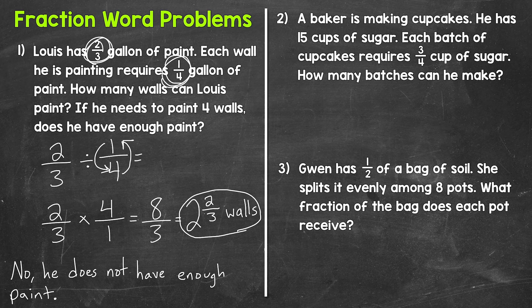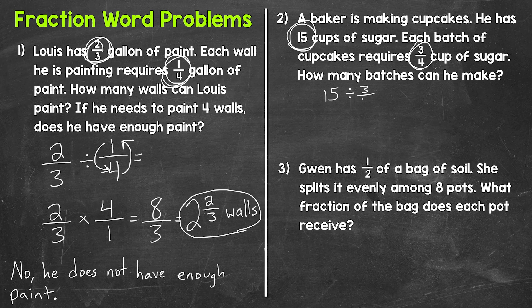Let's move on to number two: a baker is making cupcakes. He has 15 cups of sugar, and each batch of cupcakes requires three-fourths of a cup of sugar. How many batches can he make? The baker is dividing 15 cups of sugar into groups of three-fourths of a cup. So we do 15 divided by three-fourths. Keep — writing 15 over one — switch, and then flip: four over three.